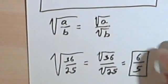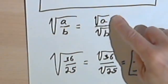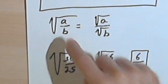Okay, now, as I said, you can take this rule and use it in the other direction as well. You can start out with two radicals and put them both under one radical sign. So here are some examples of that.